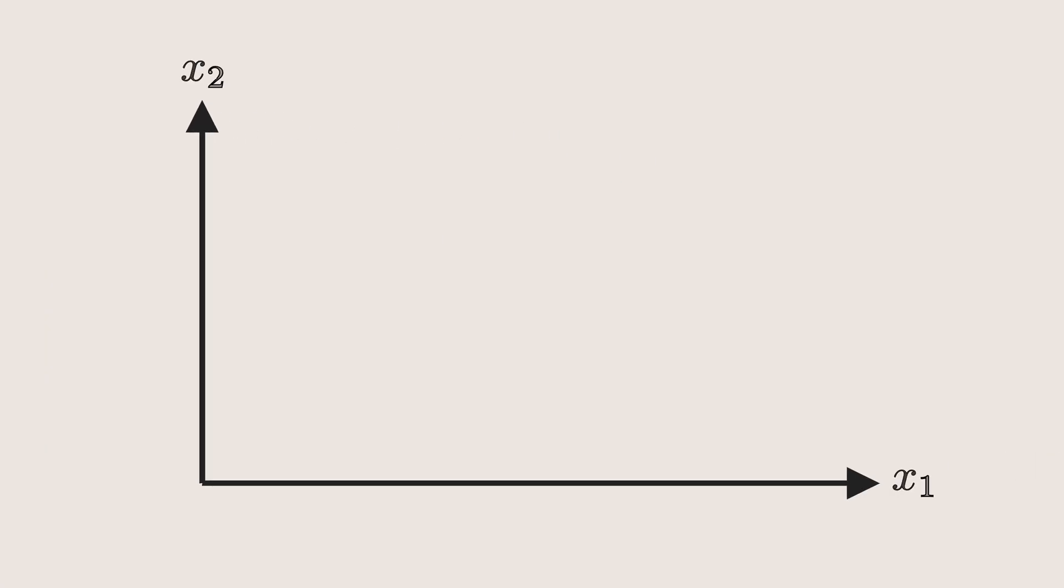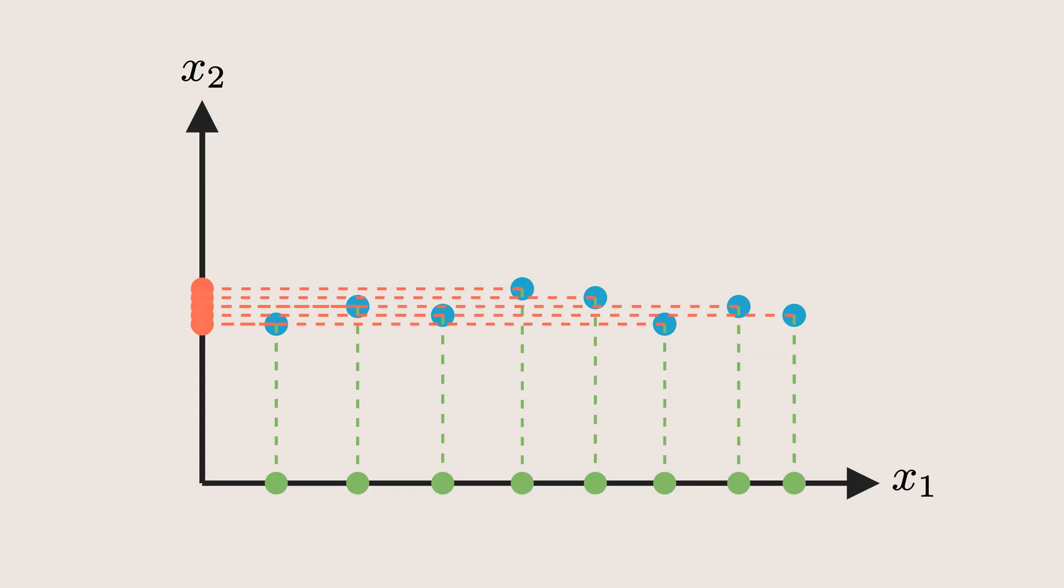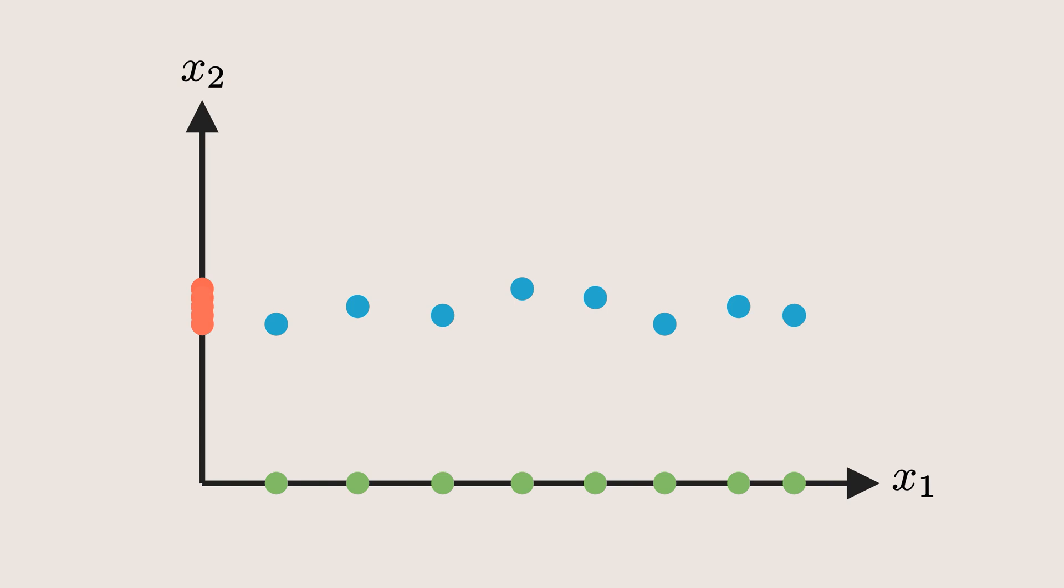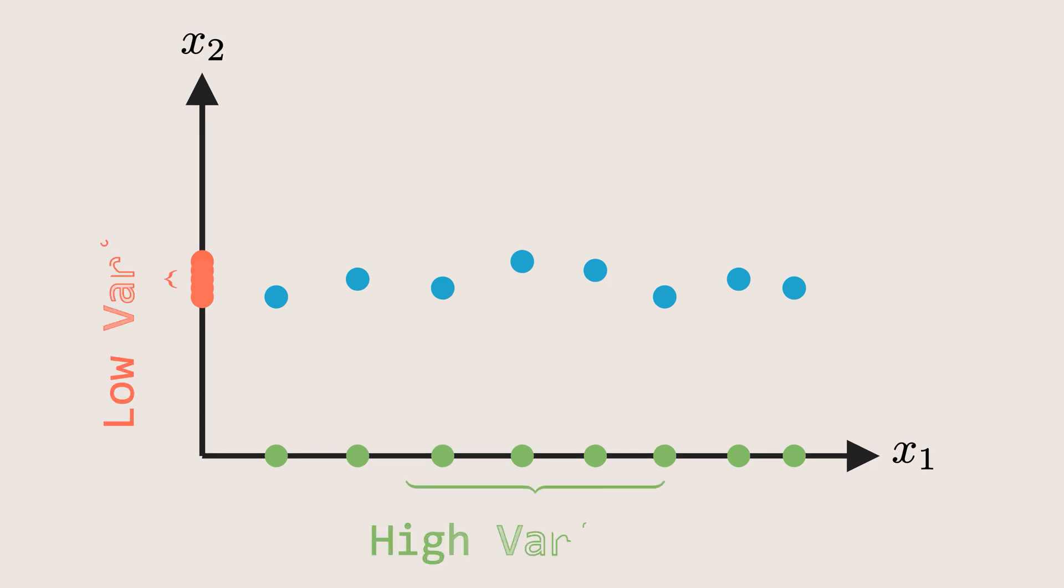If we plot these two features on a graph and project the data points onto their respective axis, we can clearly see this difference. Feature X1 shows a wide spread whereas feature X2 is tightly packed. What does this mean?